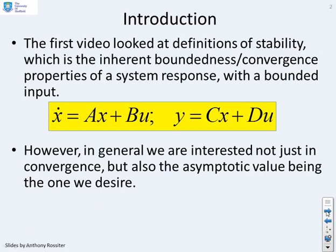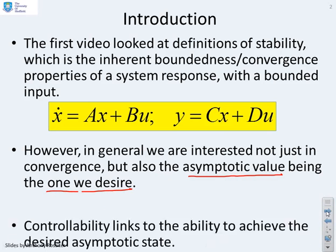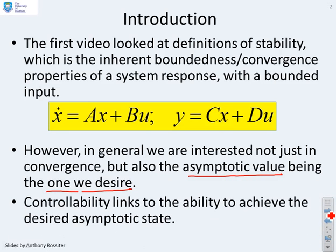However, in general we're interested not just in convergence, but we also want the asymptotic value of the state or output to be the one that we really want. And controllability links precisely to this. Are we able to achieve the desired asymptotic state?